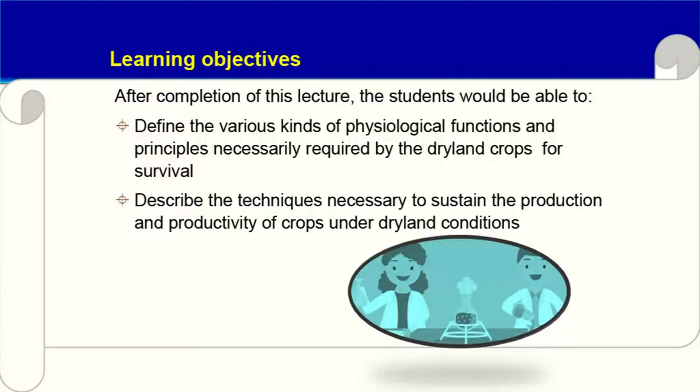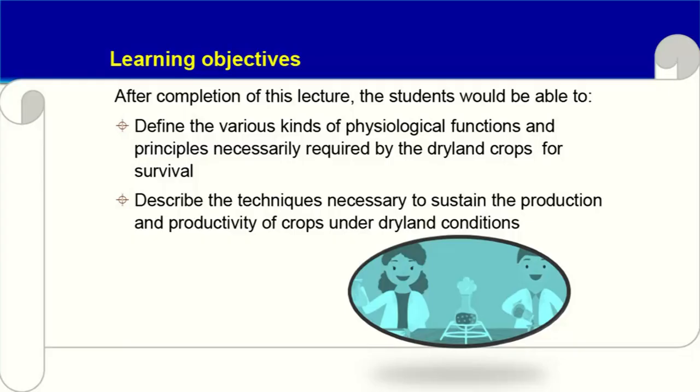The learning objectives are to define the various kinds of physiological functions and principles necessarily required by the dry lands for survival. In dry land, we definitely have a shortage of moisture, and how and why these physiological principles can be applicable. Also to describe the techniques necessary to sustain the production and productivity of crops under dry land conditions.